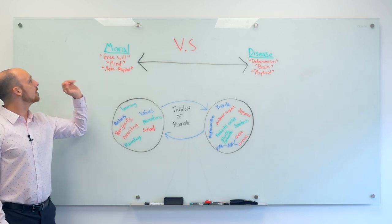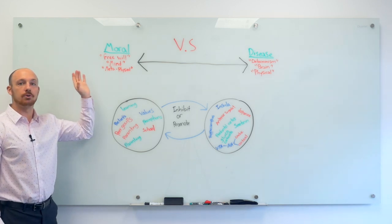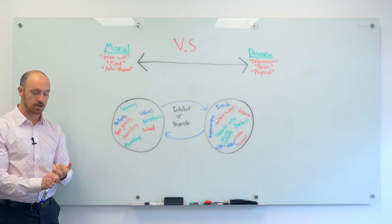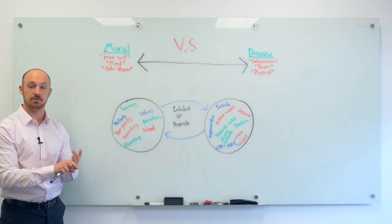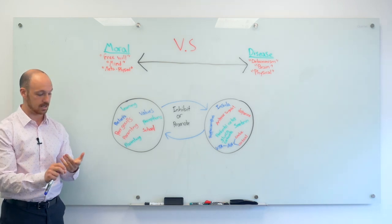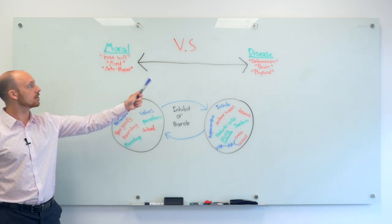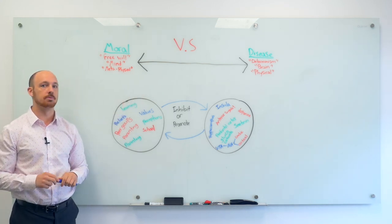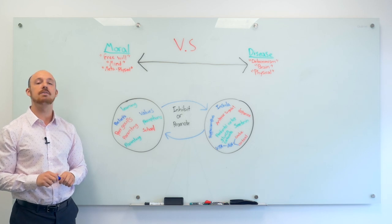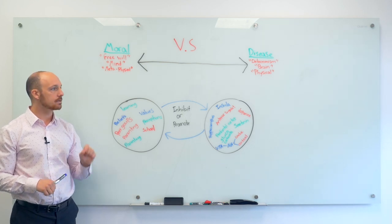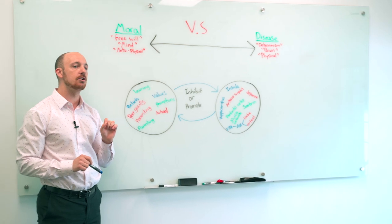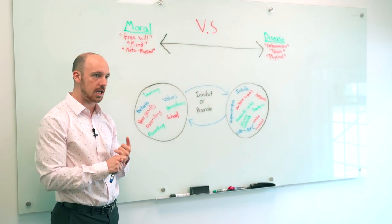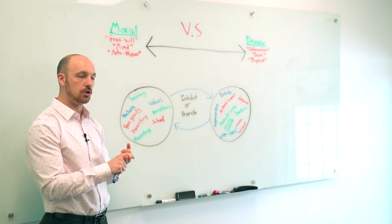The moral model is based on the fact that we have free will - you do have 100% control over your actions, your thoughts, your emotions, and your mood. Now the disease model is the opposite. It's based on determinism, and determinism is even a weirder doctrine.